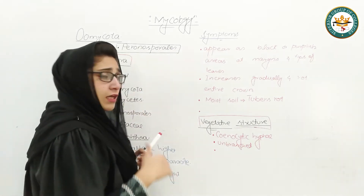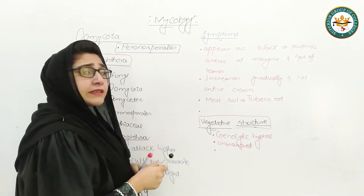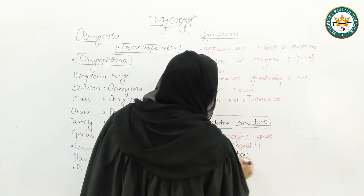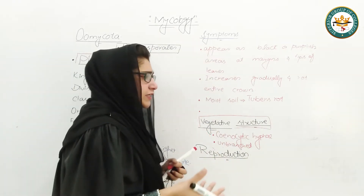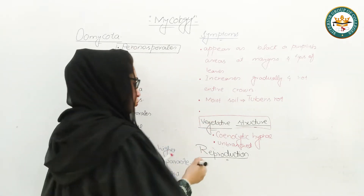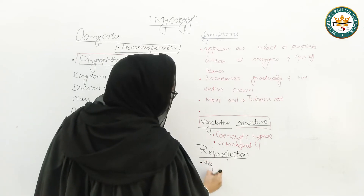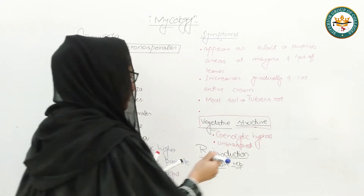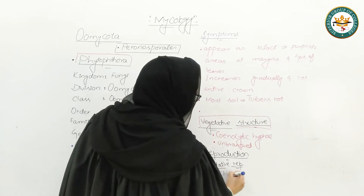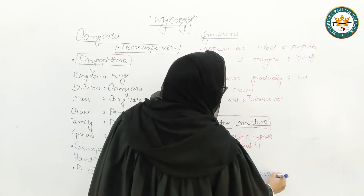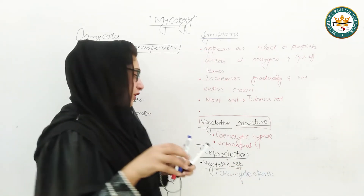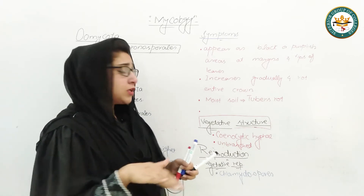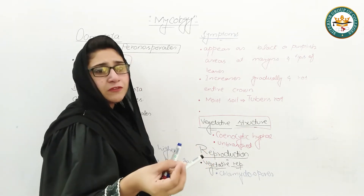We have discussed symptoms and the introduction of Phytophthora. Now we will discuss details of the life cycle or reproduction. Reproduction is of three types: vegetative, asexual, and sexual reproduction. Sexual reproduction is very rare. First we will talk about vegetative reproduction, which also is very rare. Vegetatively, they reproduce through chlamydospores, which are thick-walled resting spores. When conditions are favourable — such as moisture content plus low temperature — they germinate into a vegetative mycelium.